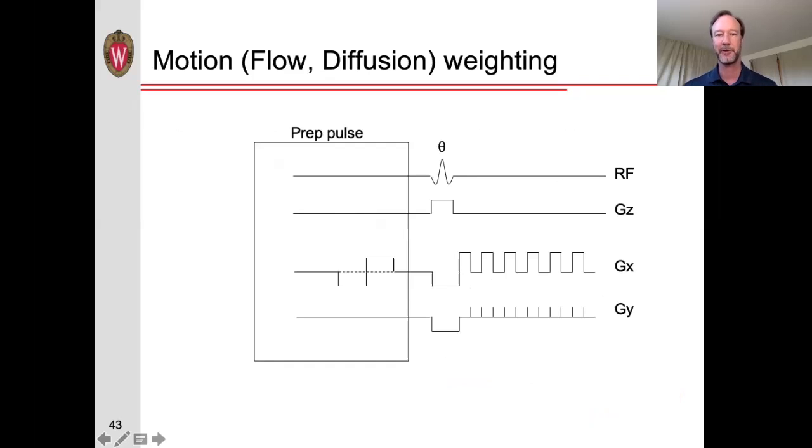And finally, we can look at some other preparation pulses that encode motion, in particular, the flow or diffusion. So, for example, if we apply this bipolar gradient, that is, we first apply a gradient in one direction, it's in the negative x direction, and then turn it on in the opposite direction for the same amount of time, so the area of these two would be the same.